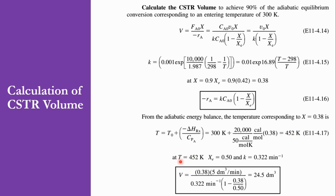At T = 452 Kelvin, the equilibrium conversion Xe = 0.5 and K = 0.322 per minute. Substituting into the CSTR volume equation: V = V0·X / [K·(1 - X/Xe)] = V0 × 0.38 / [0.322 × (1 - 0.38/0.5)]. The corresponding volume is 24.5 cubic decimetre. This is the CSTR volume required to achieve 90% of the adiabatic equilibrium conversion, which is X = 0.38.